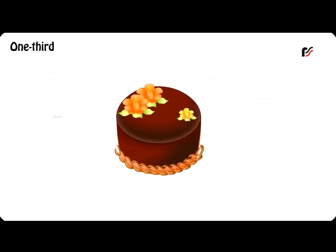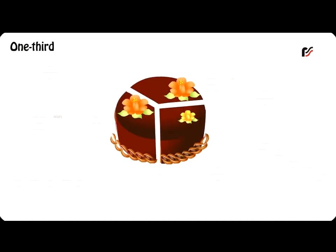One Third: When a whole thing is divided into three equal parts, each part is called one third. One third is written as one by three. One third plus one third plus one third is equal to one whole.